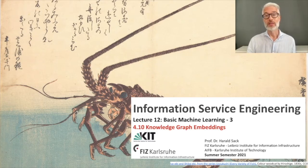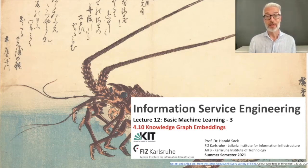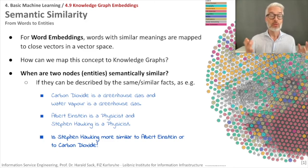If you have seen the last lecture and notebook, you are already familiar with word embeddings. Now we want to extend this concept of embeddings also to knowledge graphs. You remember, for word embeddings, words with similar meaning are mapped to close vectors in a vector space. How can we map this concept also to knowledge graphs?